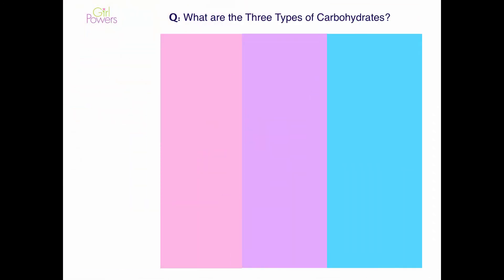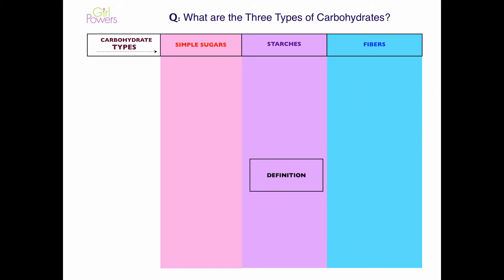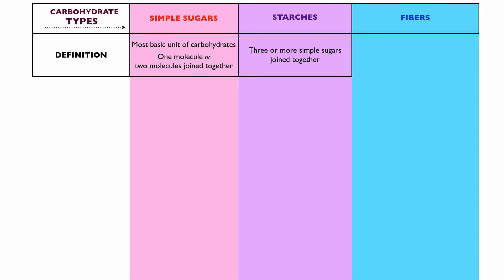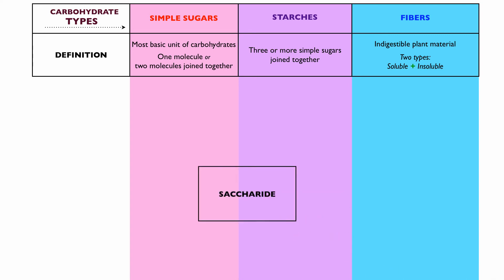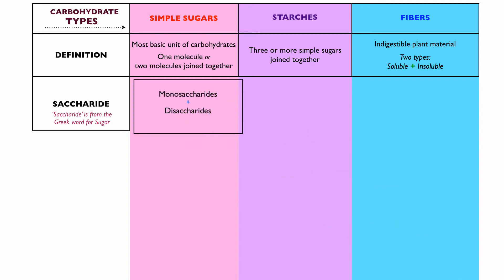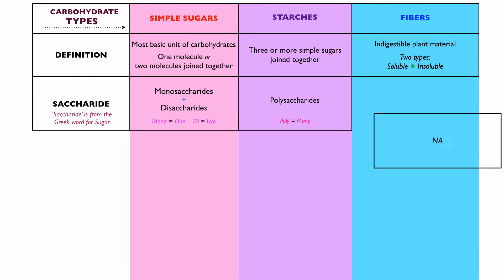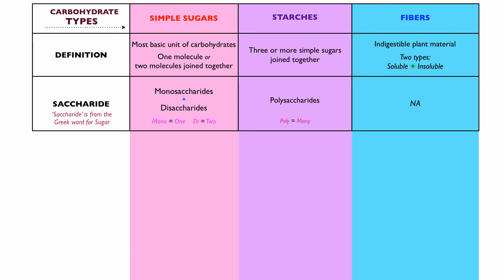So what are the three types of carbohydrates? Simple sugars, starches, and fibers. A simple sugar is the most basic unit of carbohydrates — one molecule or two molecules joined together. Starches are three or more simple sugars joined together. Fibers are indigestible plant material, and there are two types: soluble and insoluble. The word 'saccharide' comes from the Greek word for sugar. Simple sugars include monosaccharides and disaccharides — mono means one and di means two. Starches include polysaccharides, where poly means many. Fibers have no saccharide classification, as they contain no sugars.